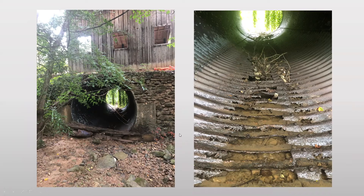Here we have an example of a 138-inch round corrugated metal pipe culvert that is 51 feet in length, located in Birmingham, Alabama. From the close-up picture, this culvert has experienced severe abrasion and corrosion to the bottom invert. We can also see common materials such as rock, wood, and branches carried through the stream that have gotten lodged in these voids.